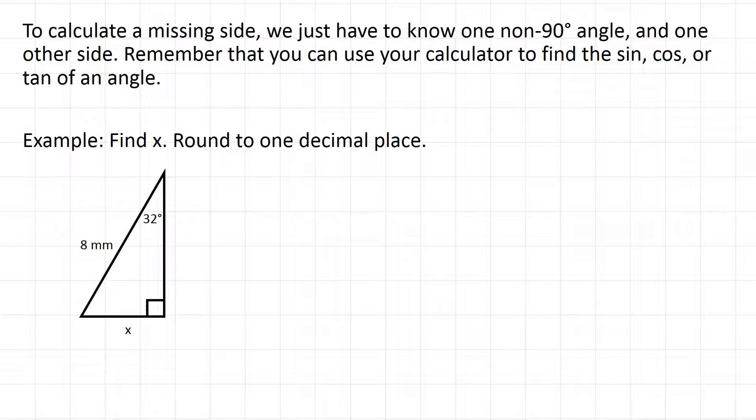So let's run through an example so you can see how this works. We're asked to find x in the triangle below, and we're told to round to one decimal place. So let's start with what we're told. Well it looks like we have a 32 degree angle at the top of the triangle, and we're also told the longest side of the triangle, which is the hypotenuse, that's 8 millimeters. We're asked to find side length x, which is directly across from 32 degrees, so that would be opposite, the opposite side from 32 degrees.